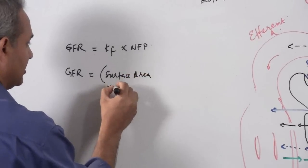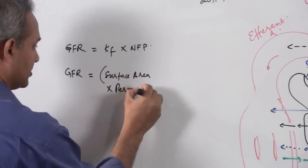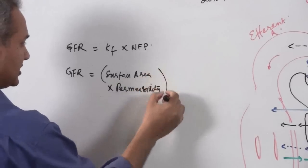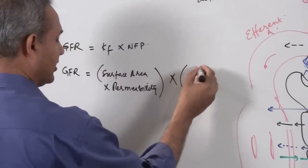...multiplied with permeability or hydraulic conductivity, and we are talking kidney substance. Permeability of hydraulic conductivity multiplied with net filtration pressure has four factors.